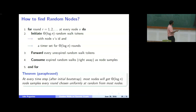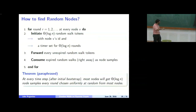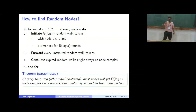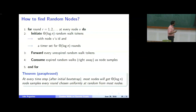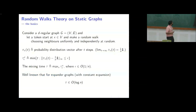The theorem we can prove is that after some bootstrapping, most nodes in the network will get theta(log n) node samples every round chosen uniformly at random from most nodes. Once this sampling algorithm is started and bootstrapped, at every time step every node — most nodes — will get theta(log n) random walk tokens, each one being a random sample from the set of peers in the network. Crucial to this is that the underlying network graphs are expander graphs.